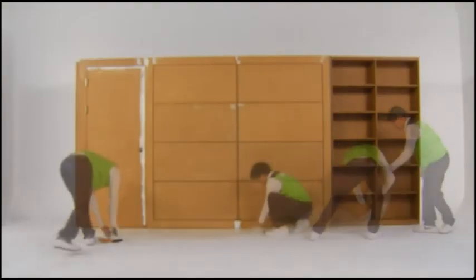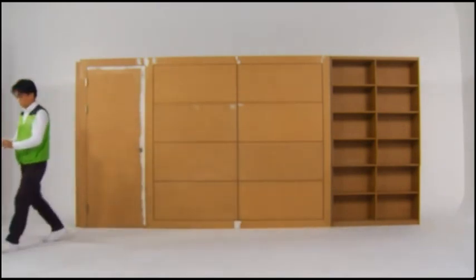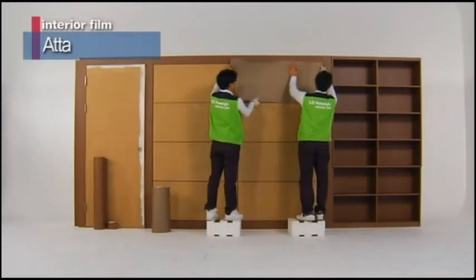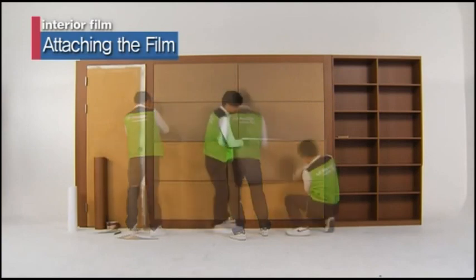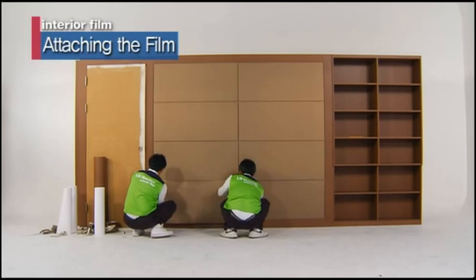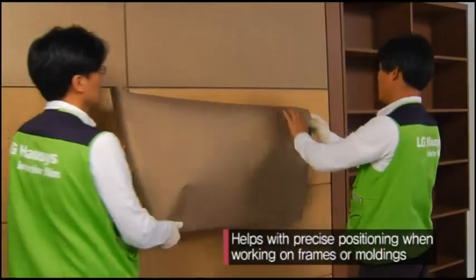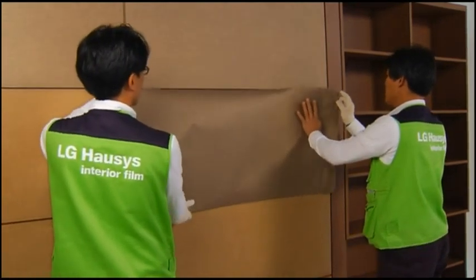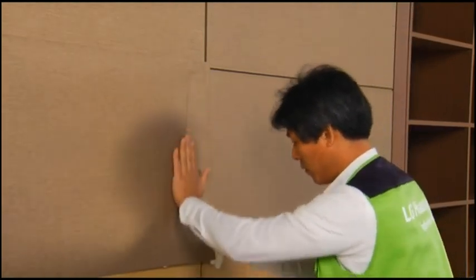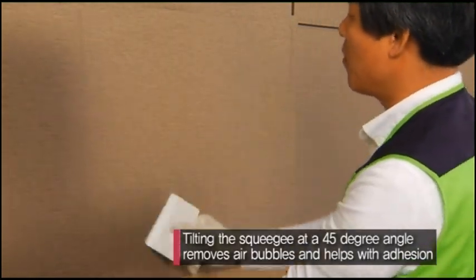The next step is attaching the interior film. Peel 10 to 30 centimeters of the film's liner and lay it on the surface to determine the exact position. Align the top and side and slowly peel the liner while using a squeegee to compress every bit of the film onto the surface.